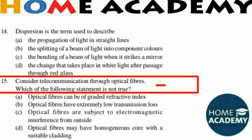Question number 15: Consider telecommunication through optical fiber. Which of the following statements is not true? The correct option is C: optical fibers are subjected to electromagnetic interference from most sides — this statement is wrong. The true statements are: optical fibers can be greatly refractive, have extremely low transmission loss, and may have a homogeneous core with suitable cladding.